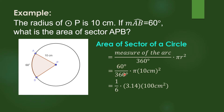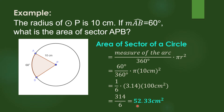We get the ratio of 60 over 360, whose lowest term is 1 over 6. The value of pi here is 3.14, and we square 10 centimeters to get 100 square centimeters. We multiply 1 times 3.14 times 100 to get 314, divided by 6, which equals 52.33 square centimeters. So the area of this sector is 52.33 square centimeters.